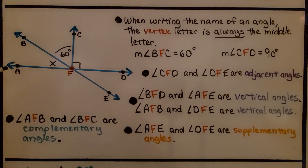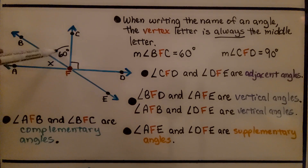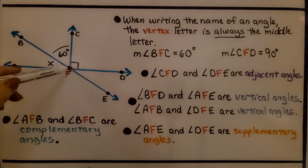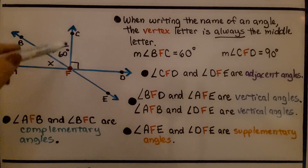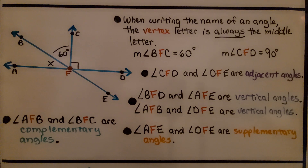Take a look at this diagram. We have X here because we don't know that angle's measure. We have 60 degrees here, and a little box showing us that this angle is 90 degrees. Notice that F is in the center of all of them — when writing the name of an angle, the vertex letter is always the middle letter. The measure of angle BFC equals 60 degrees, with vertex F in the center.